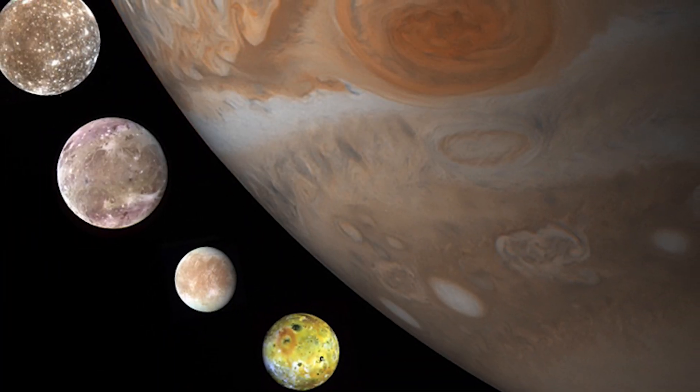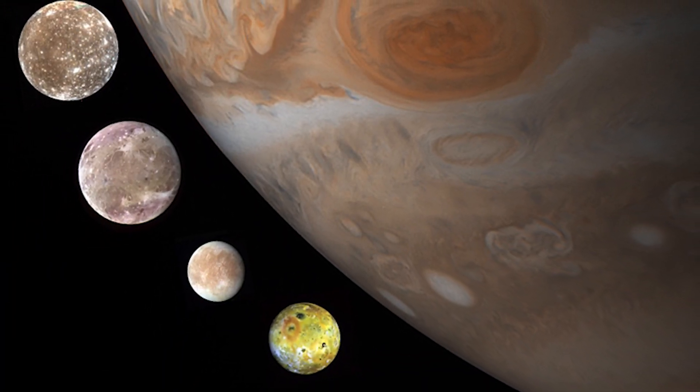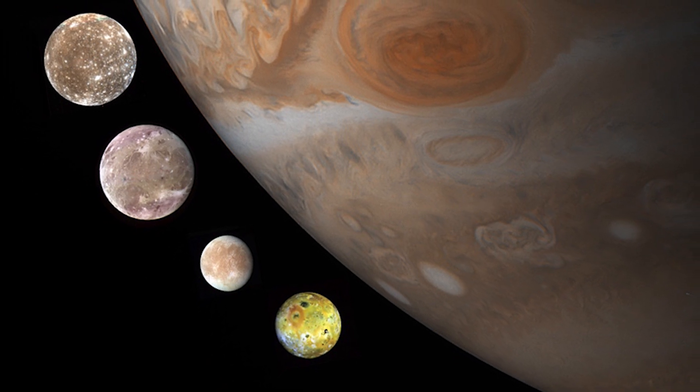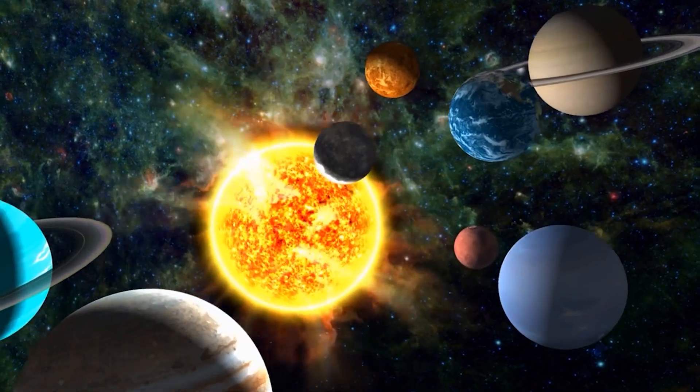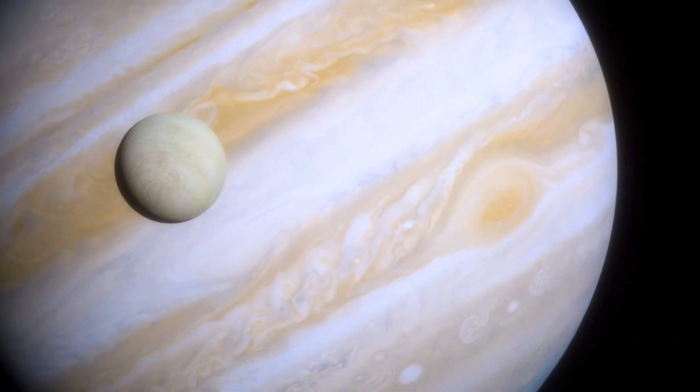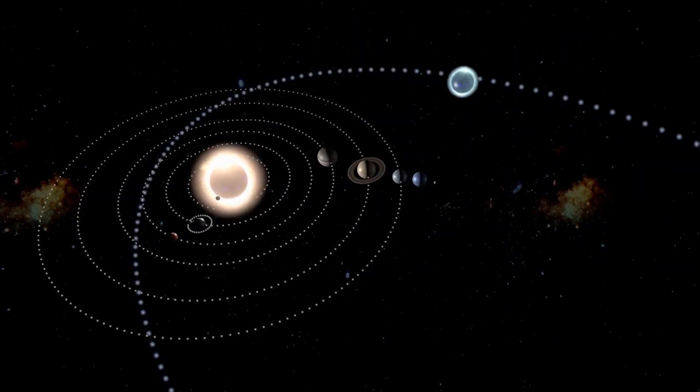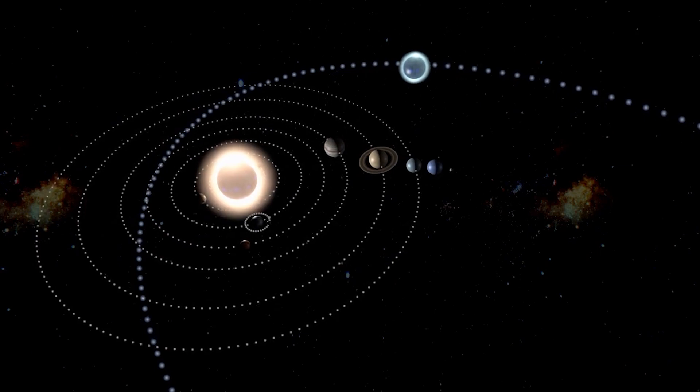Galileo Galilei discovered Io, Europa, Ganymede, and Callisto in 1610. Since then, there have been 80 moons found to orbit Jupiter. Both Io and Europa are comparable in size to our moon. When compared to Ganymede, Callisto has a diameter that is almost as large as that of Mercury.